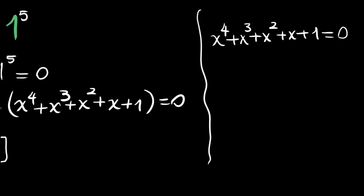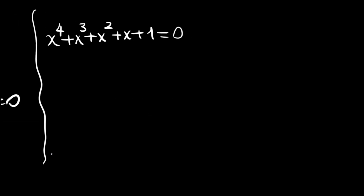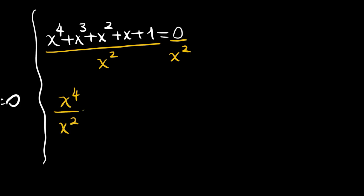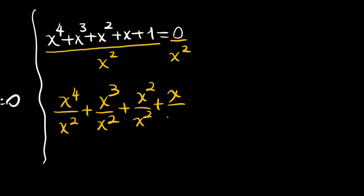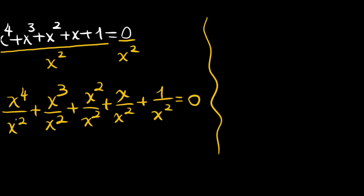This is our problem now. We will divide both sides by x squared, since x is not 0 for this quartic. Dividing both sides by x squared gives us x to the power 4 divided by x squared, plus x cubed divided by x squared, plus x squared divided by x squared, plus x divided by x squared, plus 1 divided by x squared, all equal to 0.